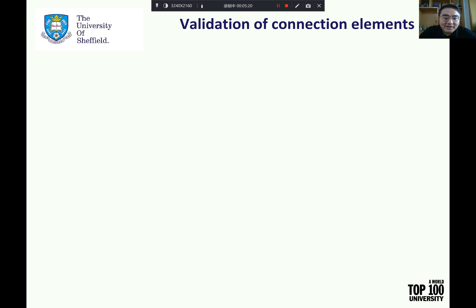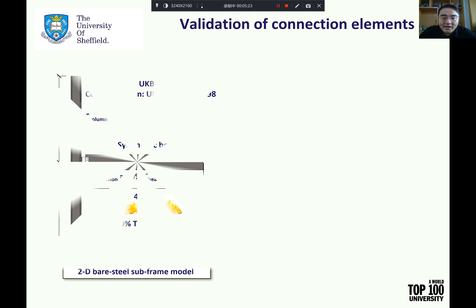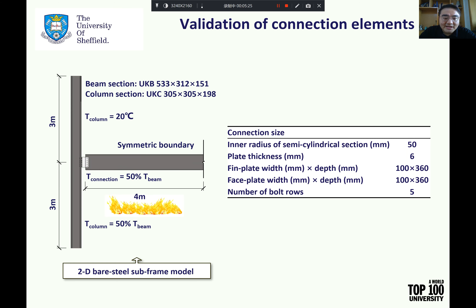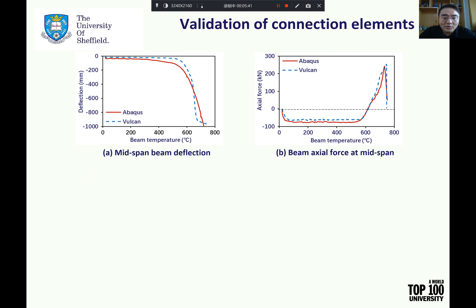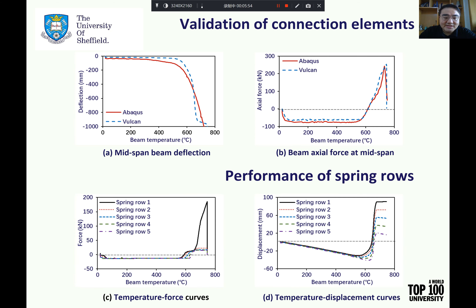The ductile connection element has been incorporated into Vulcan. A 2D steel sub-frame model has been created using both Vulcan and Abaqus to check whether the connection element has been correctly incorporated into Vulcan. The detailed dimensions of the ductile connection used in the sub-frame model are listed in the table. The results from the Abaqus and Vulcan sub-frame models are compared and shown in figures A and B. It can be seen from these figures that Vulcan results are in good agreement with Abaqus results. Temperature-force and temperature-displacement curves of each spring component in the Vulcan model are shown in figures C and D.